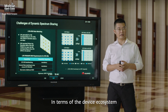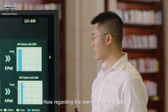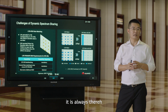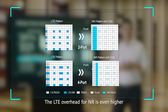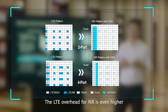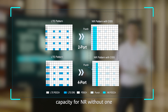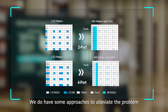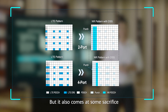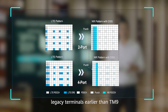In terms of the device ecosystem, we already have the mainstream chipset vendors supporting DSS. Now regarding the overhead for the CRS, it is always there no matter whether there is LTE traffic being sent. The LTE overhead for NR is even higher if we have a four-port compared to two-port. The overhead can represent up to 30% of capacity for NR without one single LTE bit being sent. We do have some approaches to alleviate the problem, for example by using MBSFN subframes. But it also comes at some sacrifice of the performance of LTE legacy terminals before TM9.